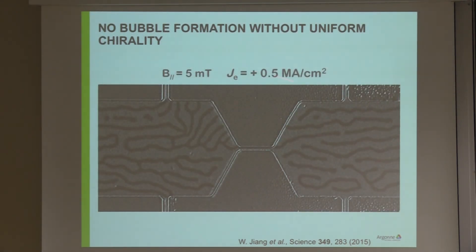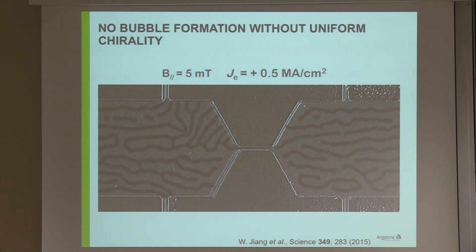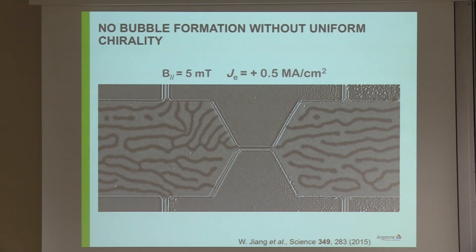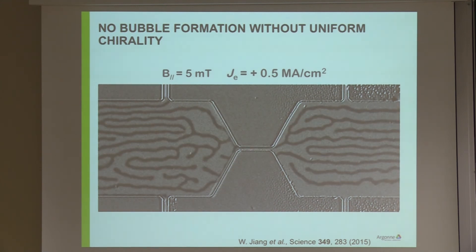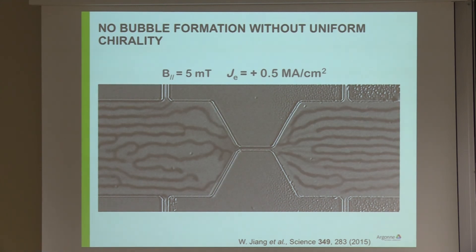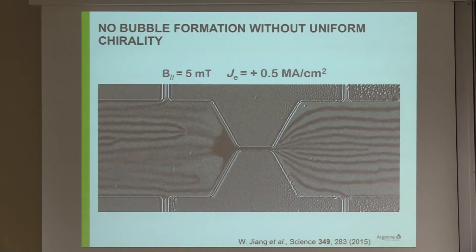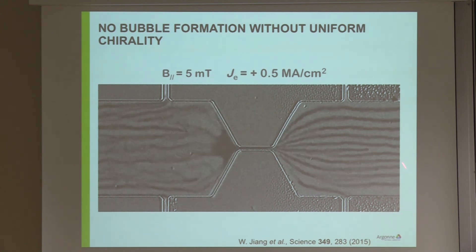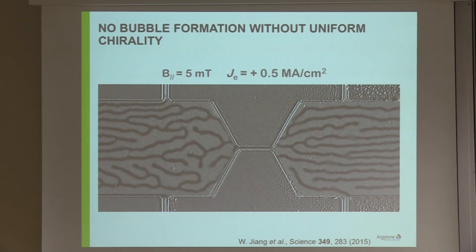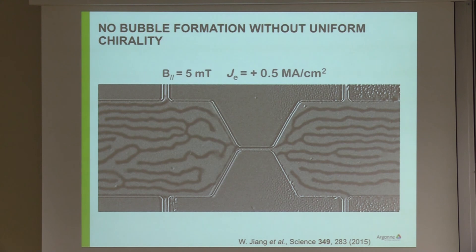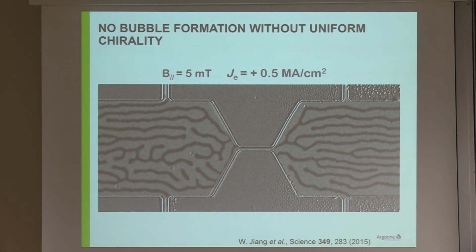Additionally, if we apply an in-plane current to the same sample geometry shown earlier and apply very high currents, we cannot create skyrmions — all we see are the domain walls lining up with the current direction.